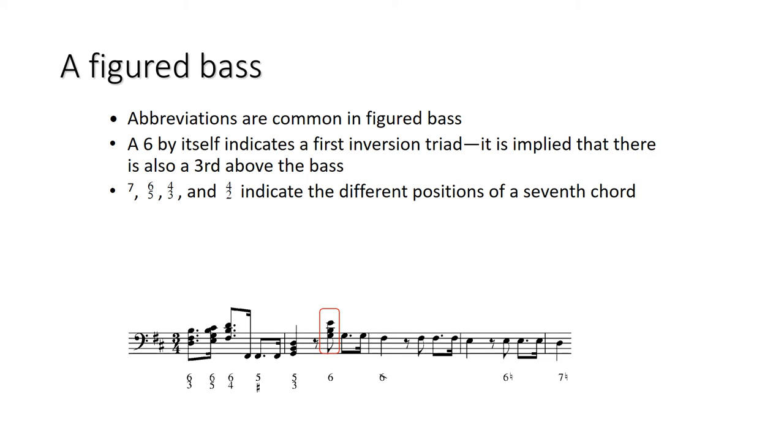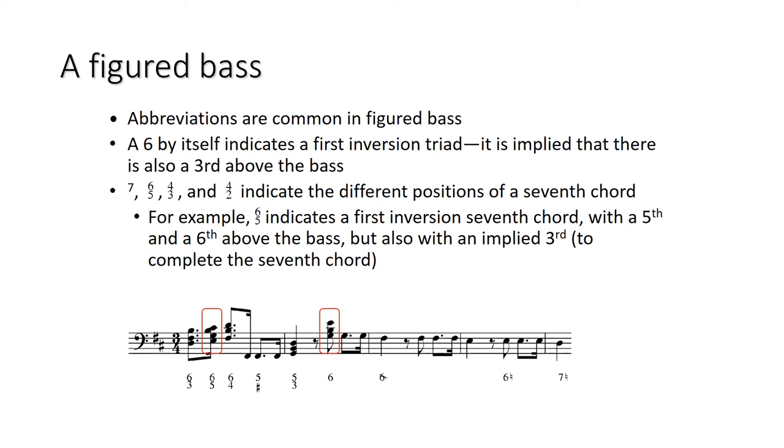If you see a seven, a six, five, a four, three, or a two, those are the different positions of a seventh chord. We see a few examples of that. So there's a six, five in the second chord there. That's a first inversion seventh chord with a fifth and a sixth above the bass. But also there's an implied three again, which would complete the seventh chord.